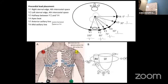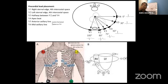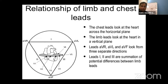These limb leads cover a two-dimensional plane showing right-left and superior-inferior changes, but no lead covers anterior-posterior direction. That's why we place chest leads over the sternum. V1 and V2 detect right ventricular changes; V2-V4 detect septal changes; V4-V6 detect left ventricular changes. So the chest leads look in the horizontal plane (AP direction) while limb leads look in the vertical plane — together all 12 leads cover every direction of the heart.